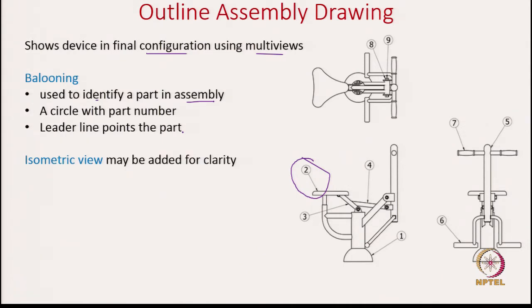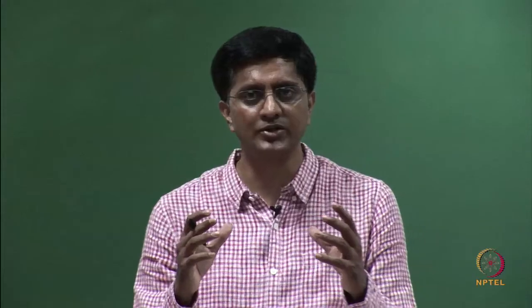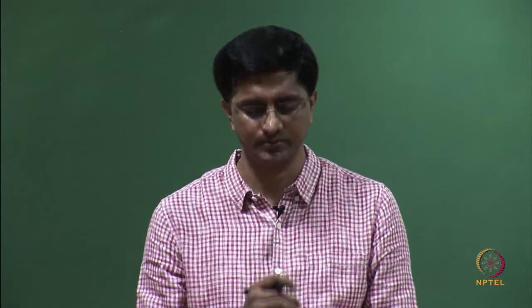Isometric views can also be used for clarity purposes. Section views may be used to show interior details — sometimes just by looking at the outline you may not see all the parts because some are hidden. To show those parts you may have to use the section view so that all parts can be shown in the assembly.